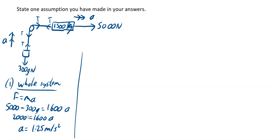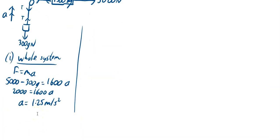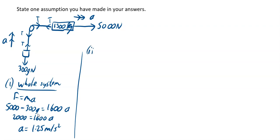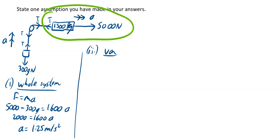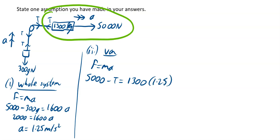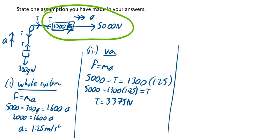For part two, find the tension in the rope. I'm going to look just at the van this time. There's your van, there are the forces on your van, and we'll go with F equals ma again. So my pulling force is 5000 minus my tension, and that's equal to my mass which is 1300, times my acceleration which you've just worked out to be 1.25. So that's going to be 5000 minus 1300 times 1.25. And when I do that on my calculator I will get 3375 newtons for my value of tension T.